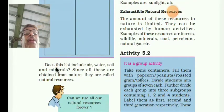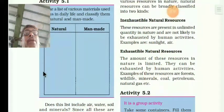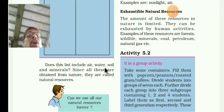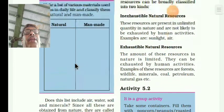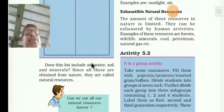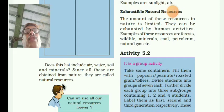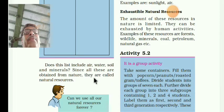Natural materials — air, water, soil, minerals — these are all from nature. Since all these are obtained from the nature, they are called natural resources. The materials which are obtained from nature are called natural resources.